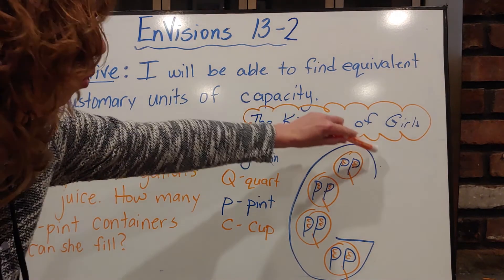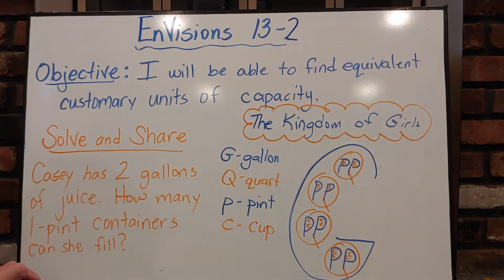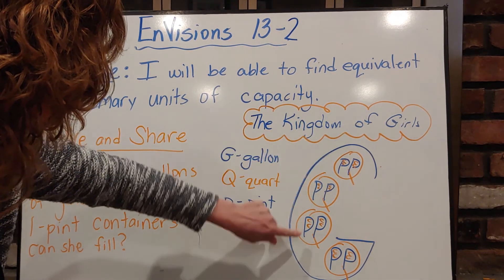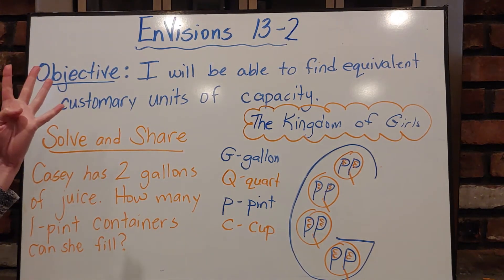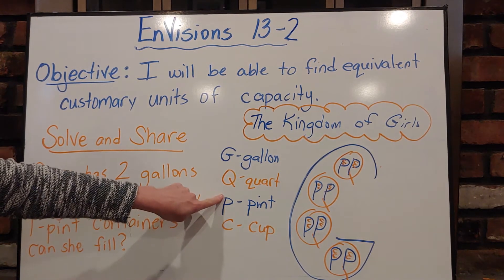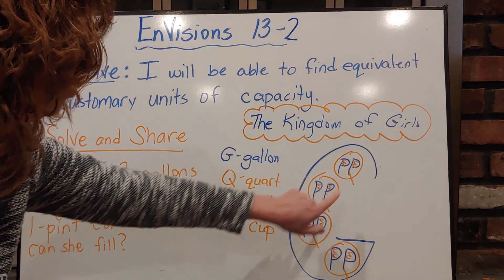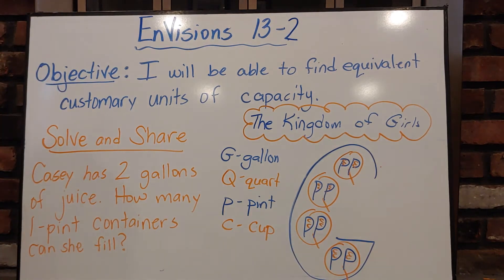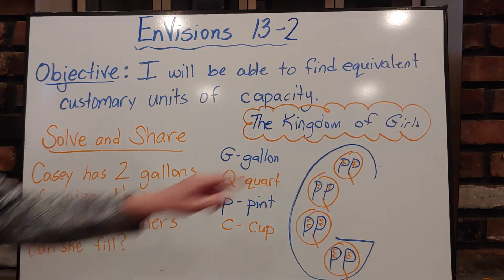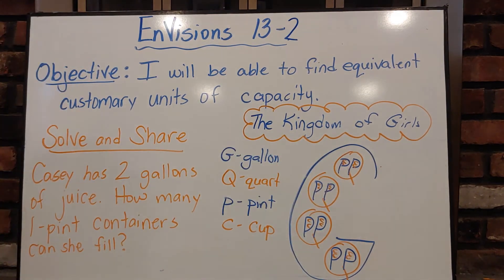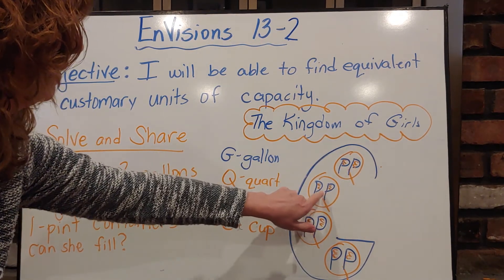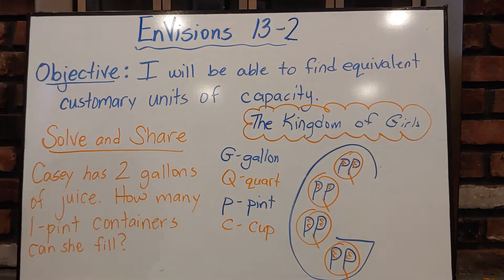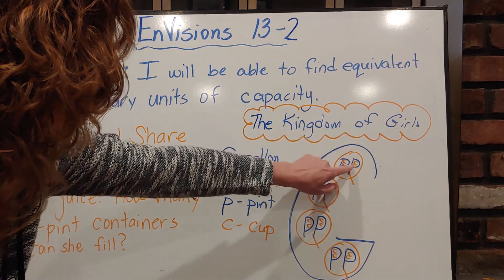Now let's relate it. In one gallon, how many quarts? Let's count our Q's: one, two, three, four — four quarts in a gallon. How many pints in a gallon? Two, four, six, eight — eight pints in a gallon, and just two pints in a quart. How many cups in a gallon? Two, four, six, eight, ten, twelve, fourteen, sixteen — sixteen cups in a gallon. Or two cups in a pint, four cups in a quart.